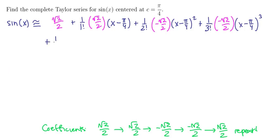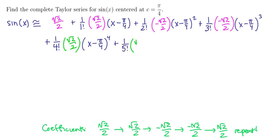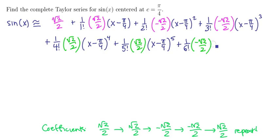That means I can fill in the rest of the series with ease. The next term is 1 over 4 factorial times positive √2 over 2 times x minus π/4 to the fourth. The next is 1 over 5 factorial times positive √2 over 2 times x minus π/4 to the fifth. Then 1 over 6 factorial times negative √2 over 2 times x minus π/4 to the sixth, and 1 over 7 factorial times negative √2 over 2 times x minus π/4 to the seventh.